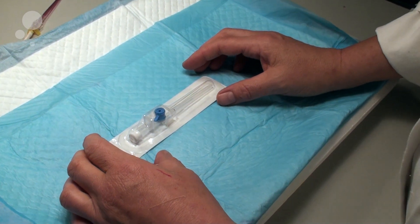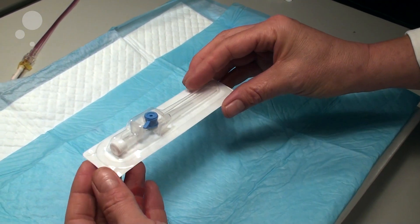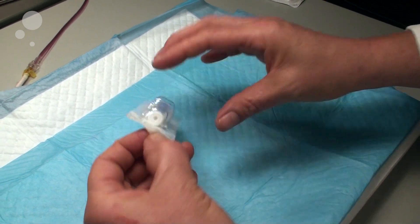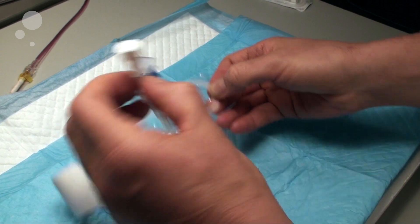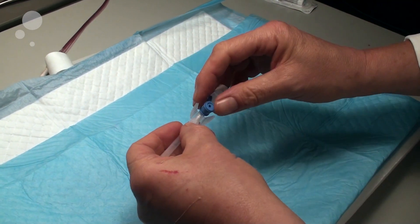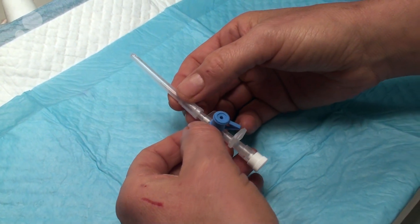When doing a tail vein catheter in rats, you could use a Venflon like this. It's basically a catheter with a guide needle inside it. I would suggest that you make yourself acquainted with the equipment before you start working on the animals.